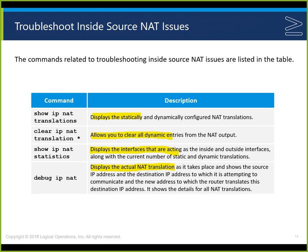'Show ip nat translations' displays statically and dynamically configured NAT translations. 'Clear ip nat translations *' — you must use the asterisk — clears all dynamic entries. Without the asterisk you get an error message. 'Show ip nat statistics' displays the interfaces acting as inside and outside, and the number of static and dynamic translations. 'Debug ip nat' shows the actual NAT translations taking place.